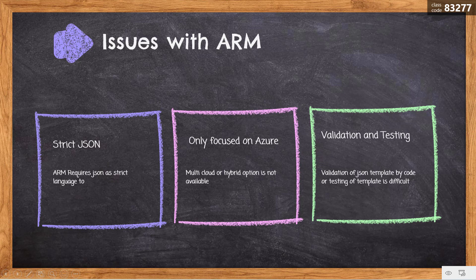So if you have a requirement to automate your infrastructure on a hybrid cloud or multi-cloud environment, then ARM is not an option that will help you automate your infrastructure entirely.